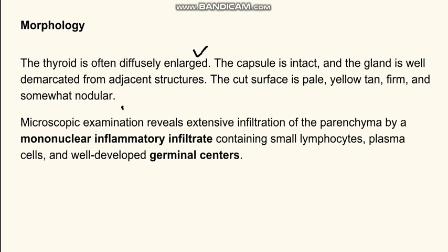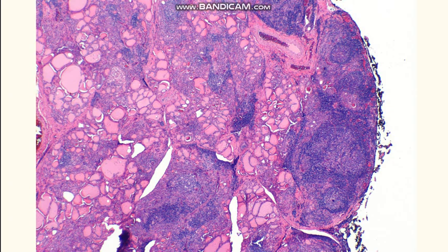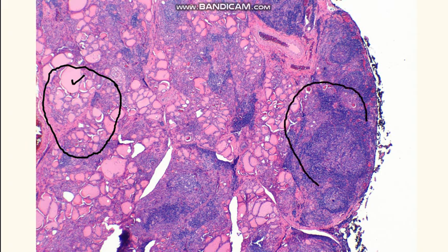Microscopically, what you will find is very characteristic. You find many mononuclear inflammatory cells, which are small lymphocytes. You can see in the picture — here is the normal thyroid, which is colloid-filled. However, in the affected area you can find a lot of bluish tinge, and this bluish tinge is because of the majority of lymphocytes present.